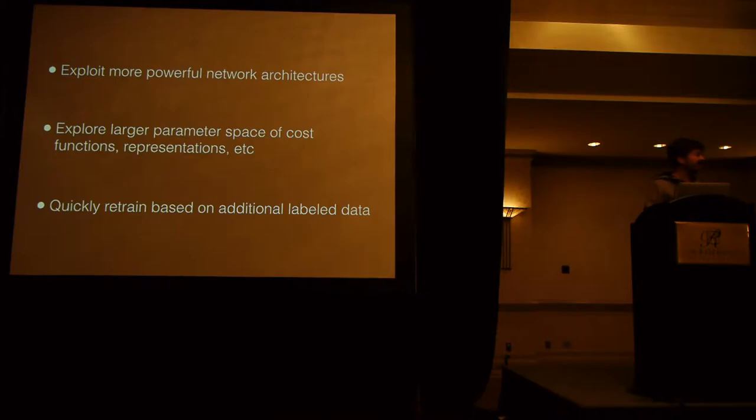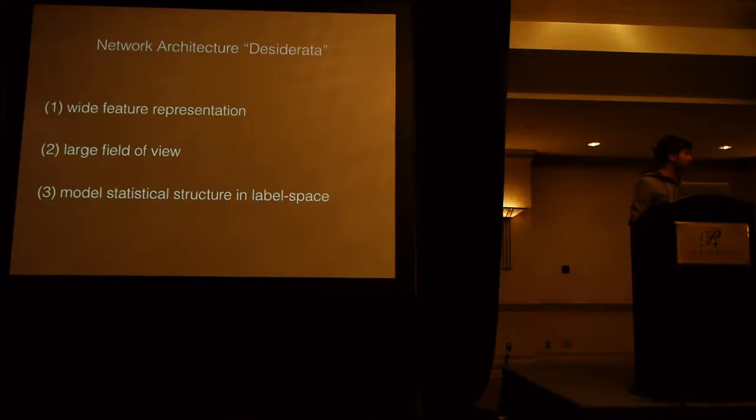We'd like to put more model complexity into them. We'd like to explore larger parameter spaces and cost functions. And we'd like to quickly be trained based on new label data. So we'd like to define a new type of model which is somehow much quicker to train, but also has several architectural features. We're going to define three things which we'll talk about in turn. The first is a wide feature representation. The second is a large field of view. And the third is the ability to model statistical structure in label space.